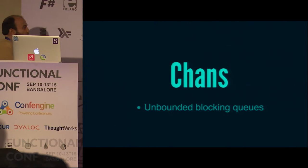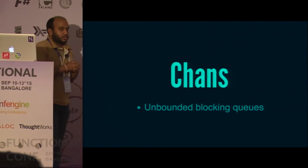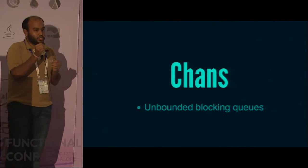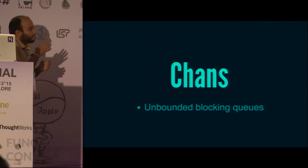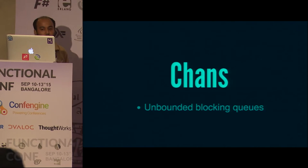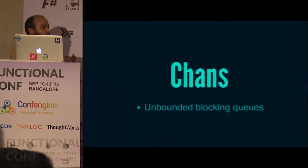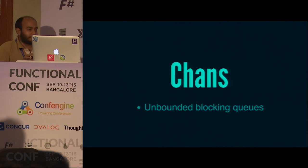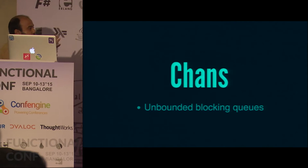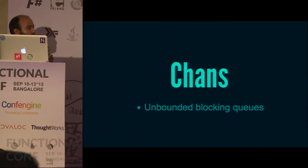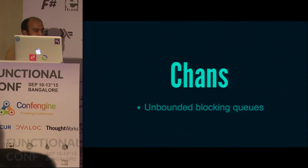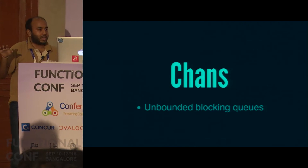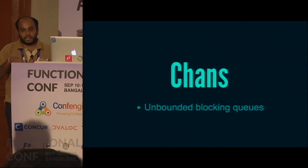What are Chans, and why do we need them? We're going to implement user-to-user messaging by giving every user their own Chan, as we saw added to the Client type. A Chan is nothing but an unbounded blocking queue — like a LinkedBlockingQueue in Java. It's unbounded, so there's no limit on it. It blocks when you try to take from an empty Chan, but since it's unbounded it does not block when you put.